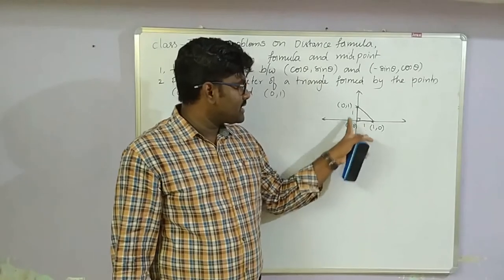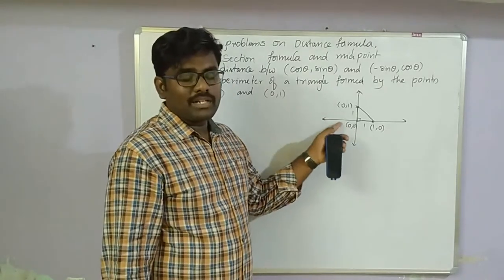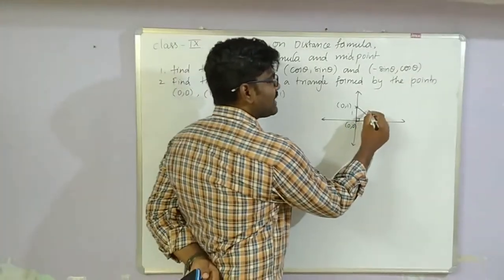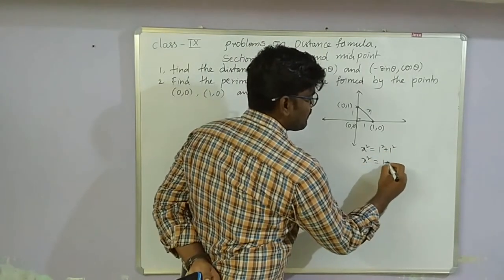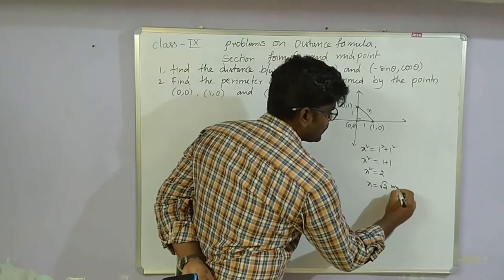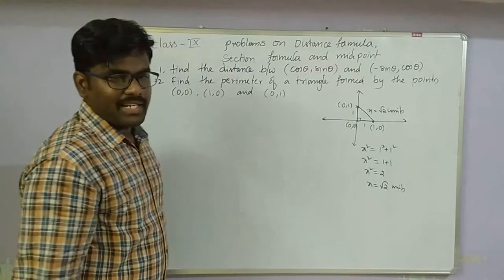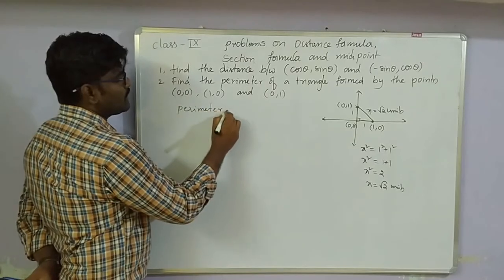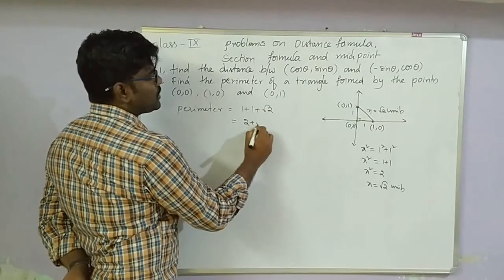The distance between (0,0) and (1,0) is 1 unit, and between (0,0) and (0,1) is 1 unit. Using Pythagoras theorem, hypotenuse² = 1² + 1² = 2, so hypotenuse = √2 units. Perimeter = sum of all sides = 1 + 1 + √2 = 2 + √2 units.